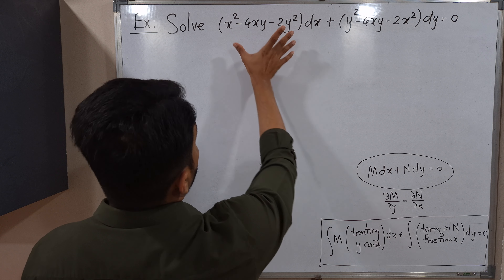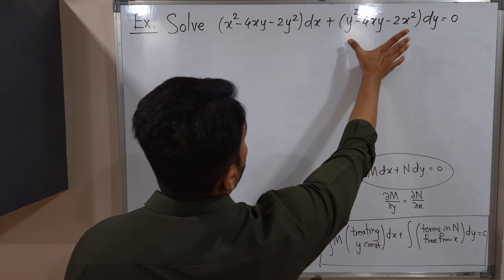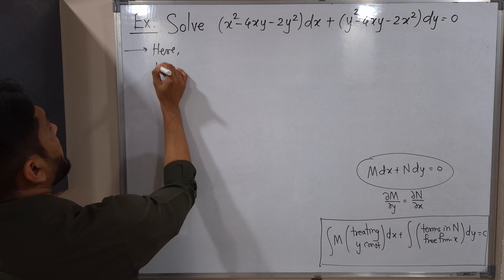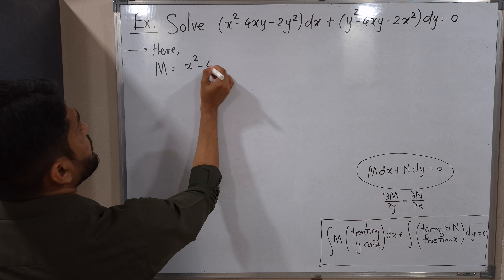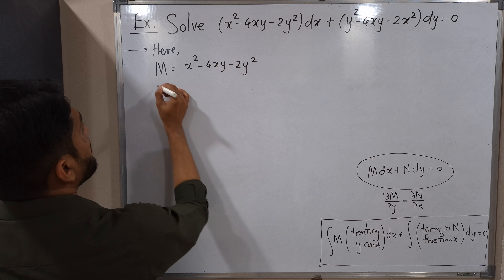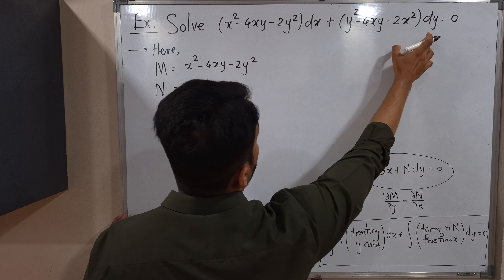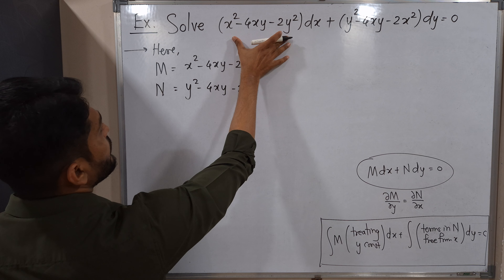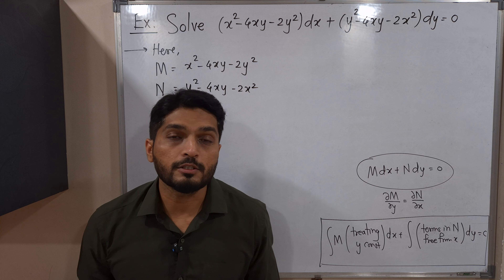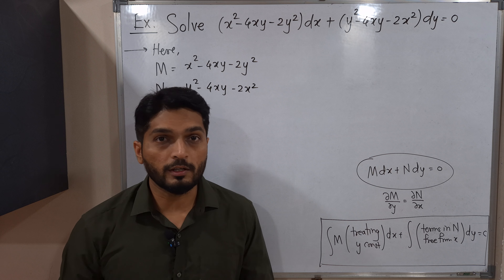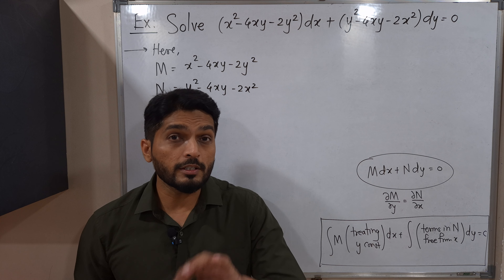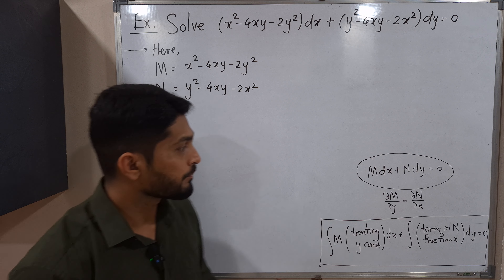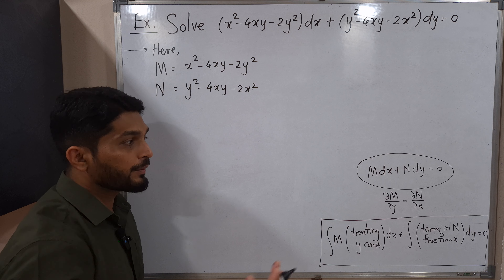We can see that M is the coefficient of dx, which is (x² − 4xy − 2y²), and N is the coefficient of dy, which is (y² − 4xy − 2x²). Both M and N are functions of x and y. Our first task is to check whether the given differential equation is exact by verifying ∂M/∂y = ∂N/∂x.